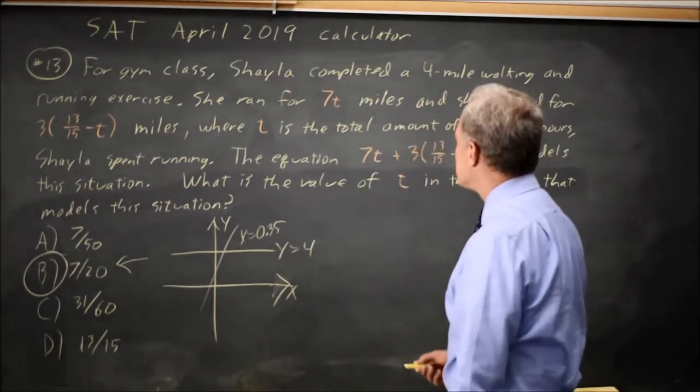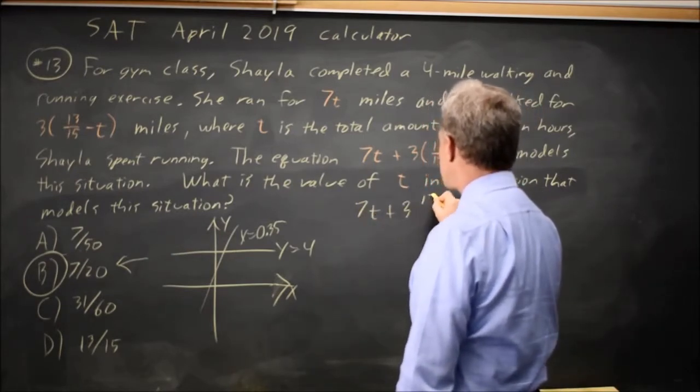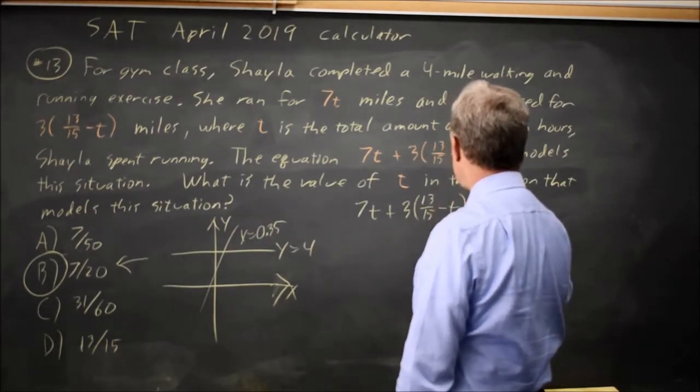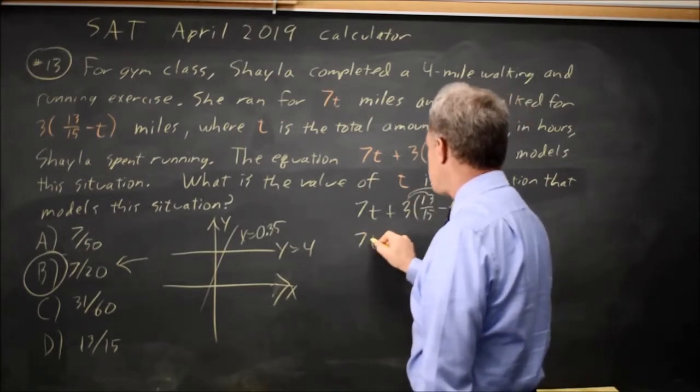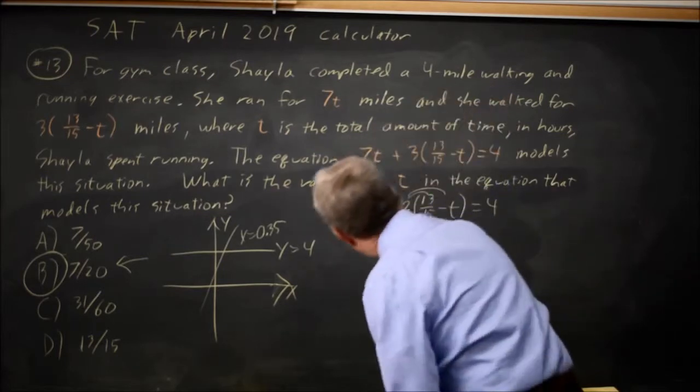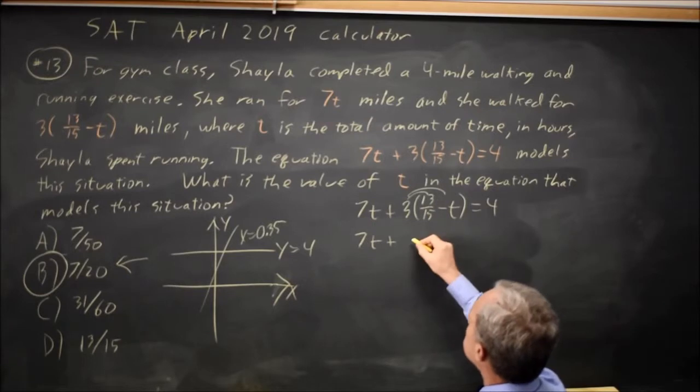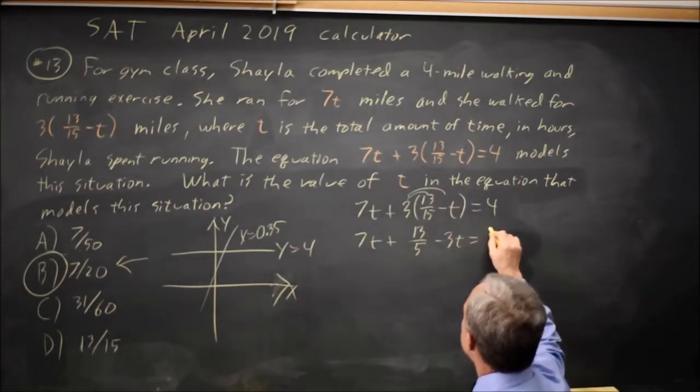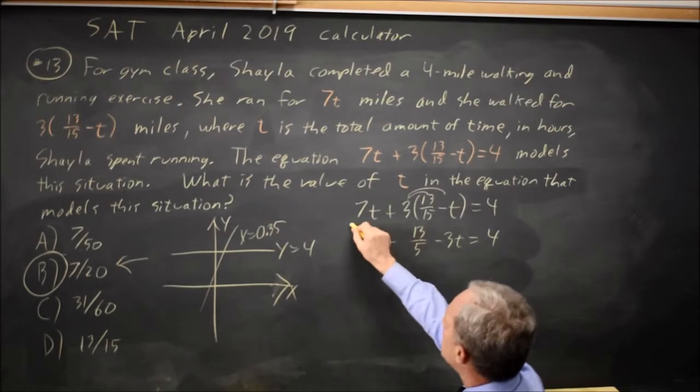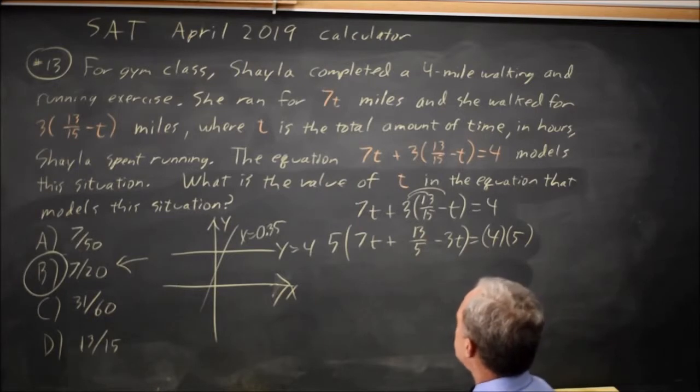But let's do it by hand because I am a math person. 7t plus 3 times 13 over 15 minus t equals 4. Let's distribute the 3 to both terms in the parentheses. 7t plus 3 times 13 over 15 is 13 over 5, because 3 over 15 is 1 over 5, minus 3t equals 4. Let's multiply both sides by 5, just to get rid of the fraction, because a lot of us make careless errors with fractions.